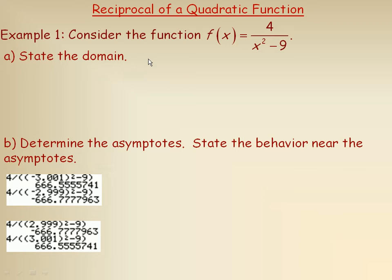This lesson will deal with the reciprocal of a quadratic function. The first example we're asked to consider is this function: 4 over x squared minus 9. We have a constant function on top — it could be 1 or any real number. The quadratic function x squared minus 9 is what's in the denominator.